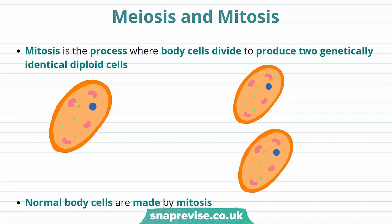Cells need to divide in order to reproduce. Meiosis and mitosis are two types of cell division, and I'll be going through both of them in this video. So let's talk about mitosis.